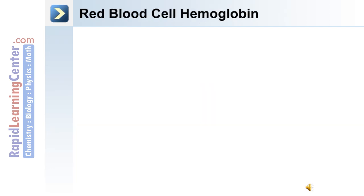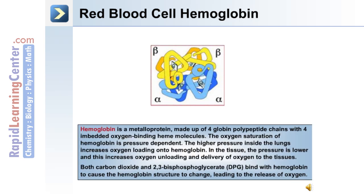The key transport protein in a red blood cell is hemoglobin. Hemoglobin is a metalloprotein made up of four globin polypeptide chains with four embedded oxygen-binding heme molecules. The oxygen saturation of hemoglobin is dependent on pressure. Higher pressure, such as inside the lungs, increases oxygen loading onto hemoglobin, whereas in the tissues, lower pressure increases oxygen unloading and the delivery of oxygen to the tissues. Both carbon dioxide and 2,3-bisphosphoglycerate, or DPG, bind with hemoglobin to cause the hemoglobin structure to change, leading to the release of oxygen.